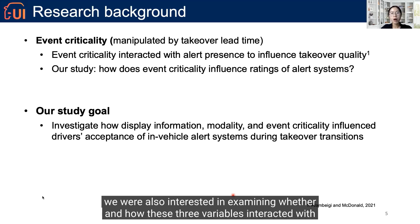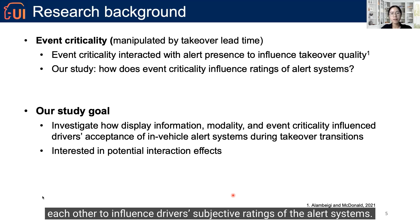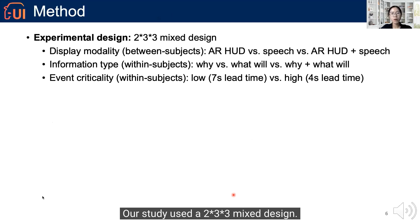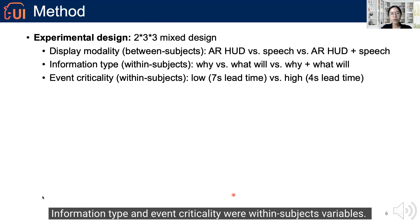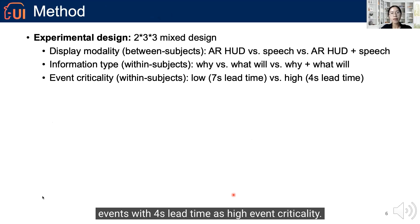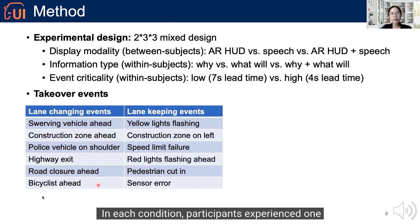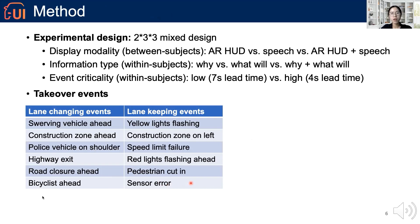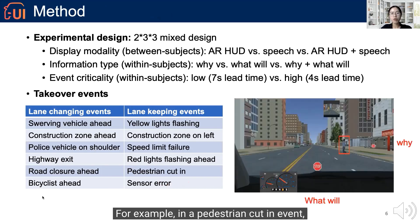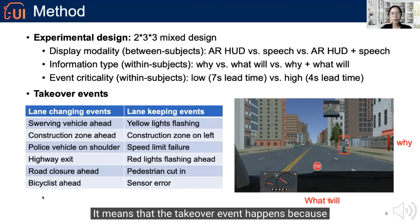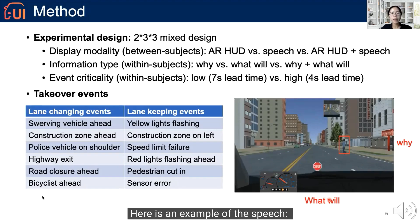To summarize, our study aimed to investigate how display information, modality, and event criticality influence drivers' acceptance of in-vehicle alert systems during takeover transitions, including whether and how these three variables interact to influence subjective ratings. Our study used a 2×3×3 mixed design. Display modality was a between-subject variable; information type and event criticality were within-subject variables. We set 7-second lead time as low event criticality and 4-second lead time as high event criticality. In each condition, participants experienced one lane-keeping event and one lane-changing event. For example, in a pedestrian cut-in event, we used a bounding box to highlight the Why information and a stop sign to show the What-to-do information, meaning the takeover event happens because of a pedestrian cut-in and the driver needs to stop before proceeding.